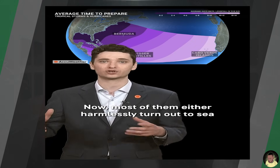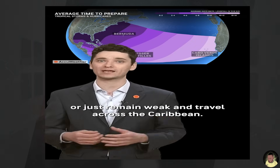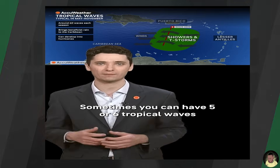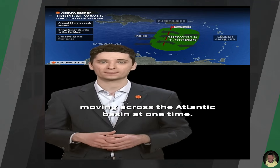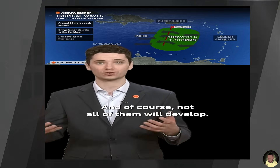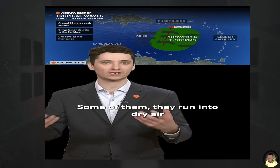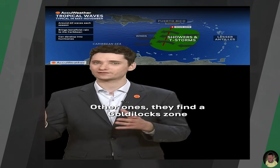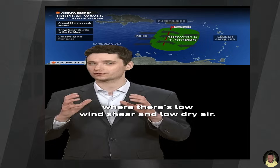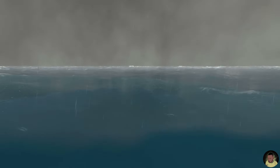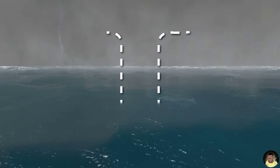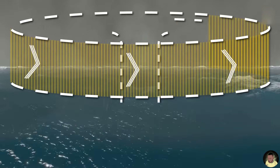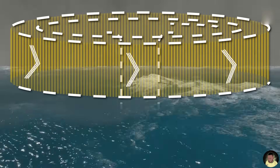Most tropical waves either harmlessly turn out to sea or remain weak as they travel across the Caribbean. Sometimes five or six tropical waves can be moving across the Atlantic basin at one time, and not all of them will develop. Some run into dry air and wind shear and fall apart. Others find a Goldilocks zone where there's low wind shear. In the early stages, warm, moist air rises over pockets of warm water, creating thunderstorms. These areas are called tropical disturbances, or INVEST — an area of investigation.